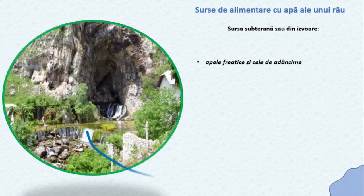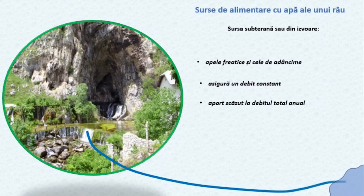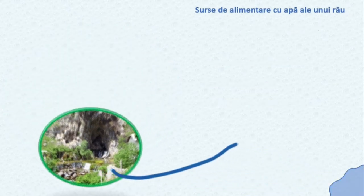Trebuie să ne îndreptăm către cursul superior râului. O primă sursă de alimentare am descoperit-o la elementele unui râu, și anume izvorul. Acesta este alimentat din surse subterane, freatice sau de adâncime, și asigură de cele mai multe ori debitul minim al unui râu.